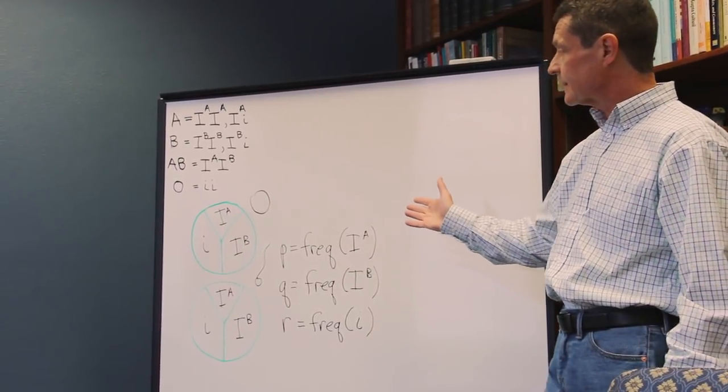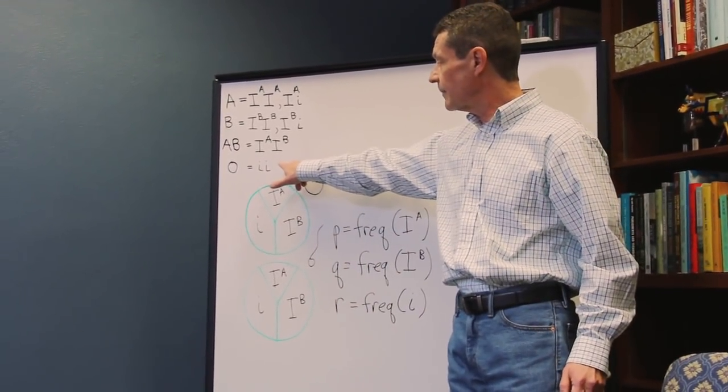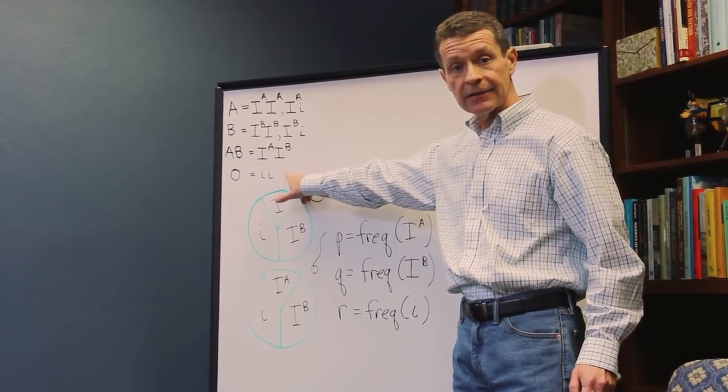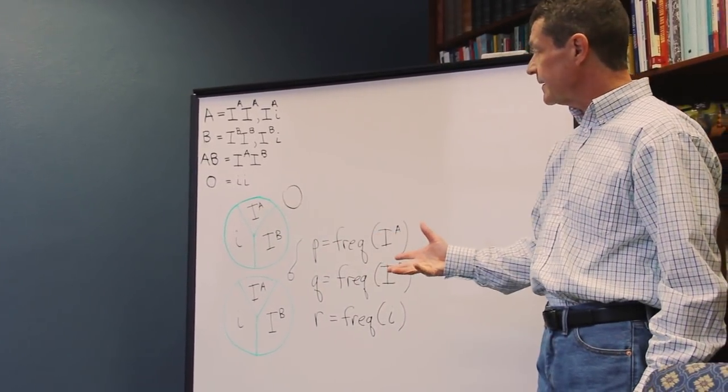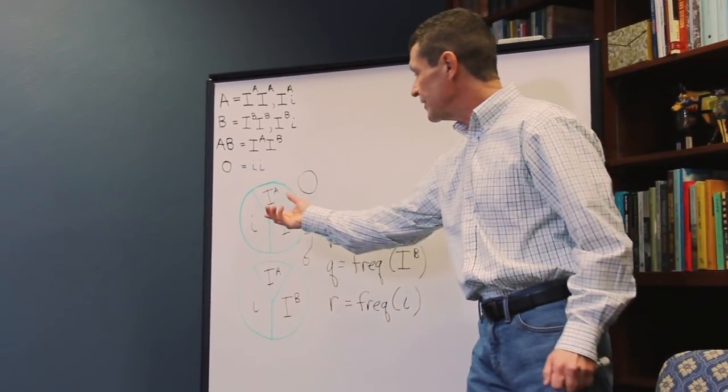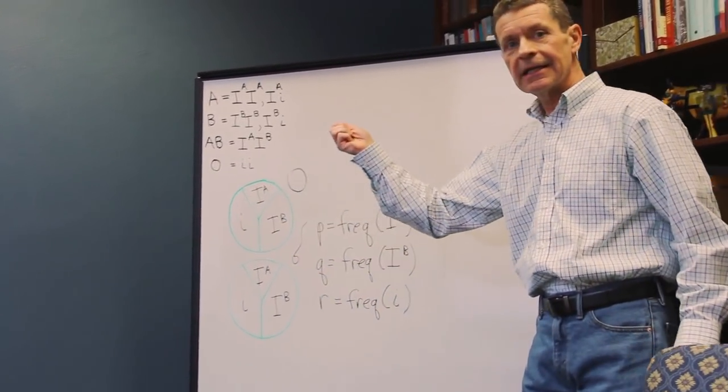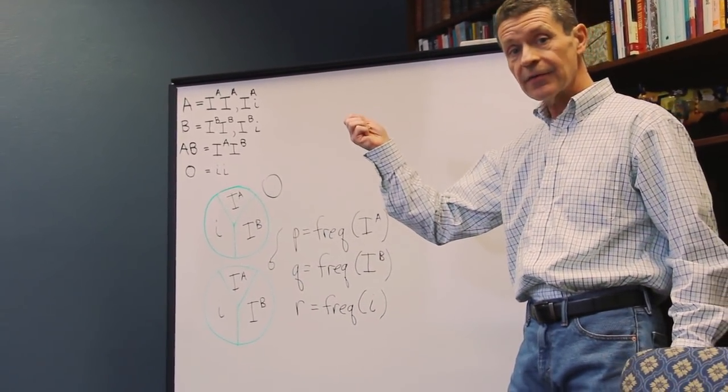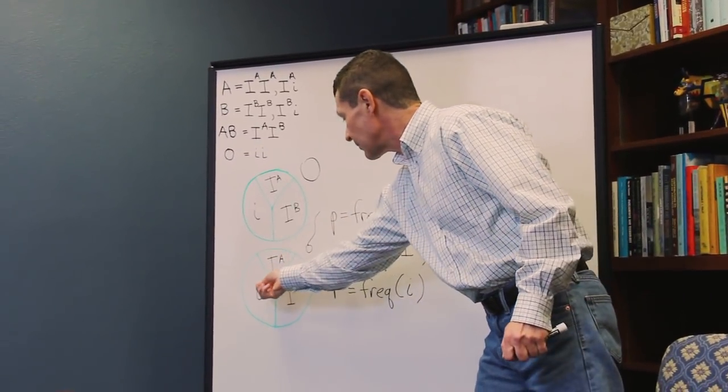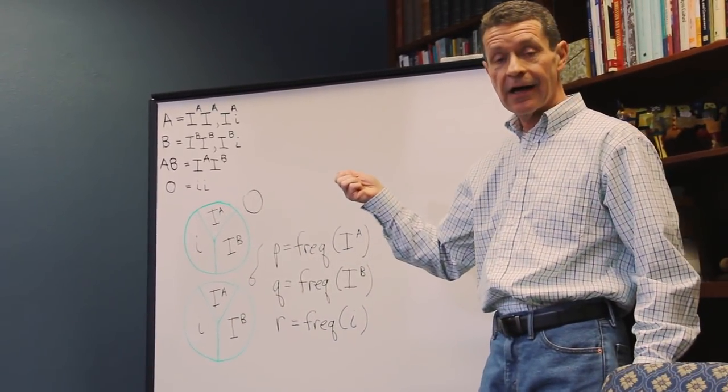So, let's start with the easiest one, which is blood type O, two small i alleles. To get blood type O, you have to reach in at random and get an egg cell with a small i and a sperm cell with a small i.